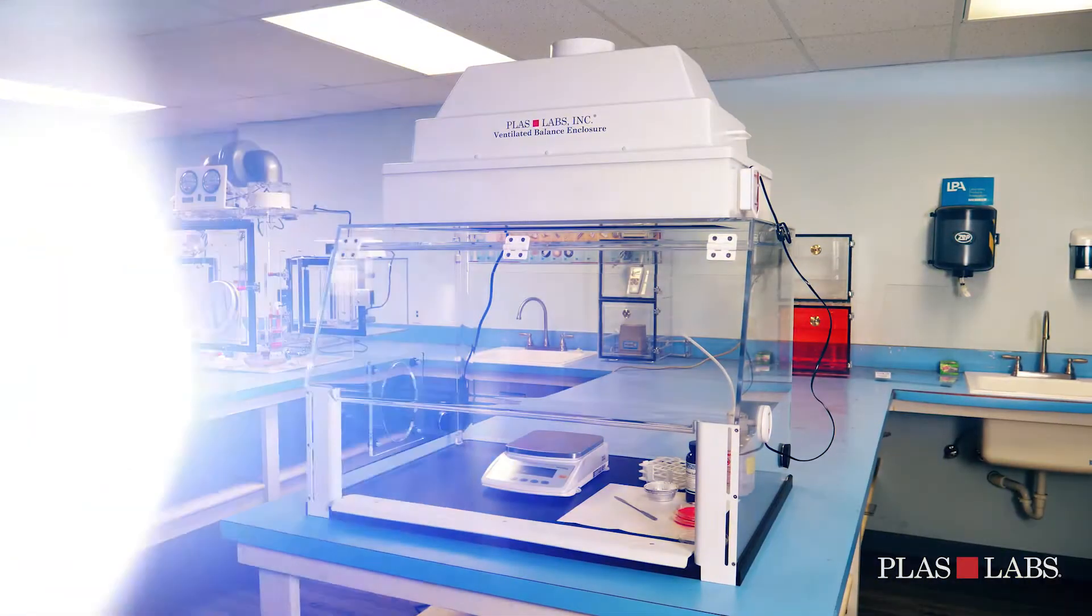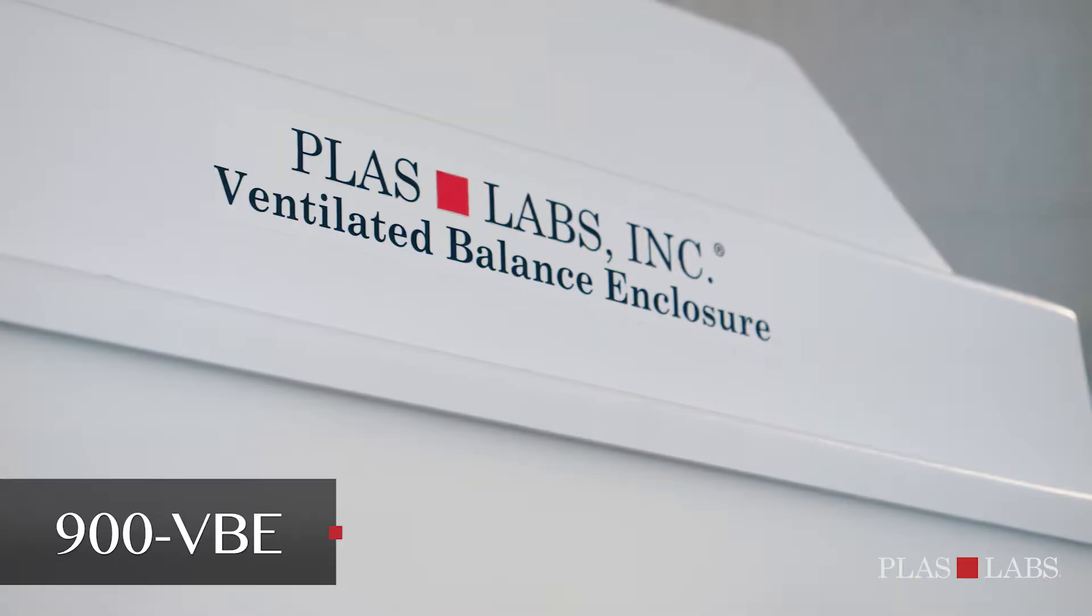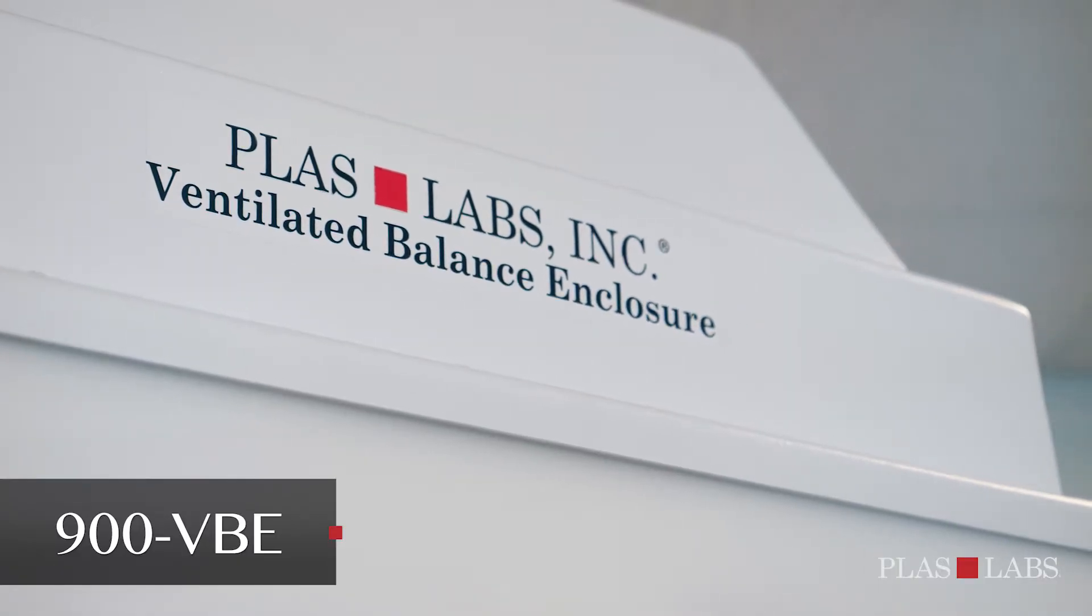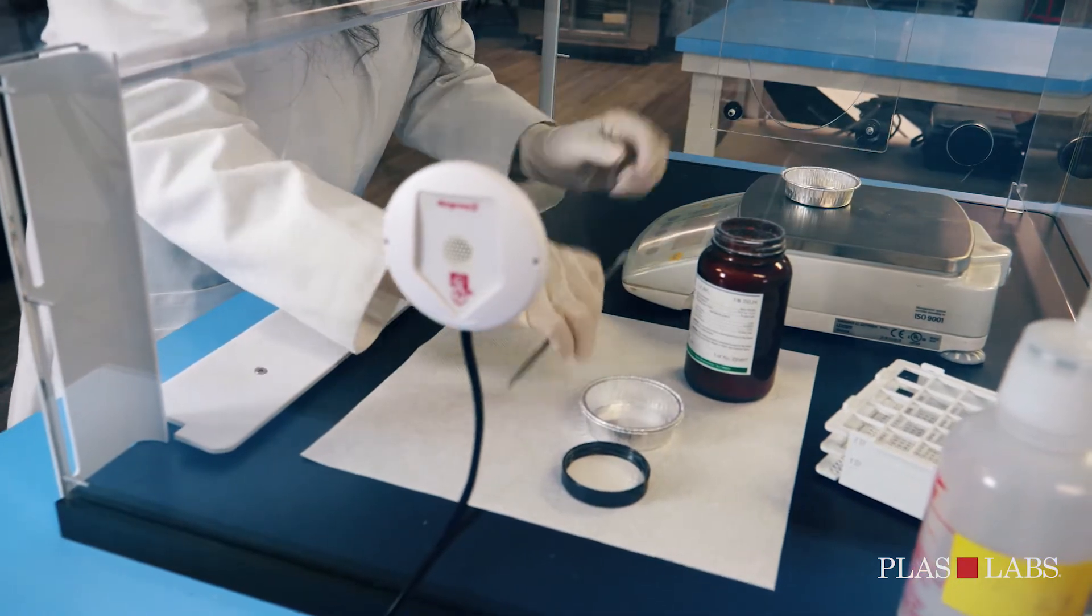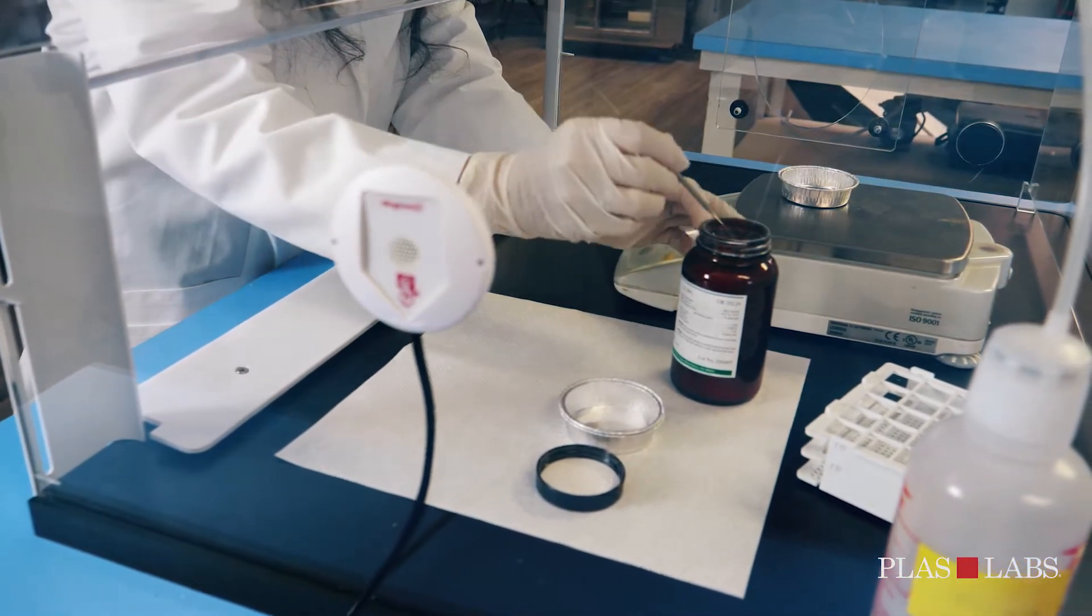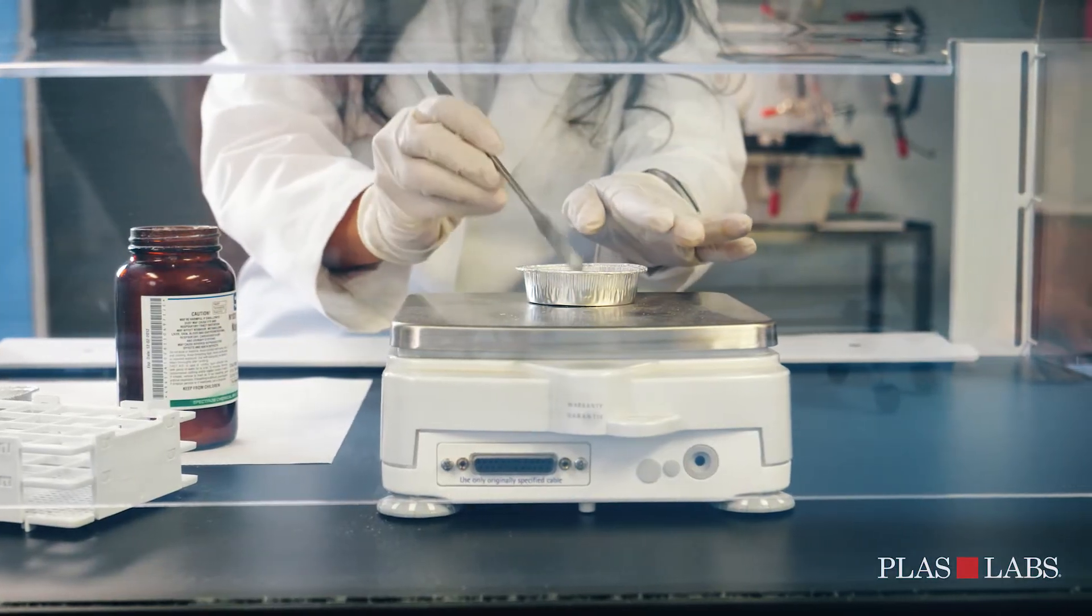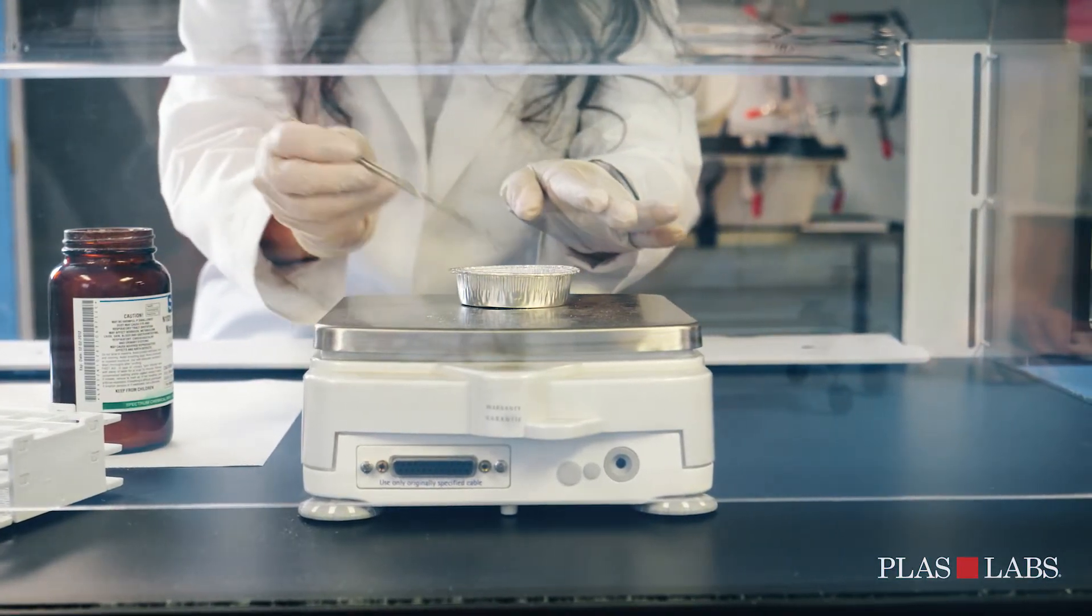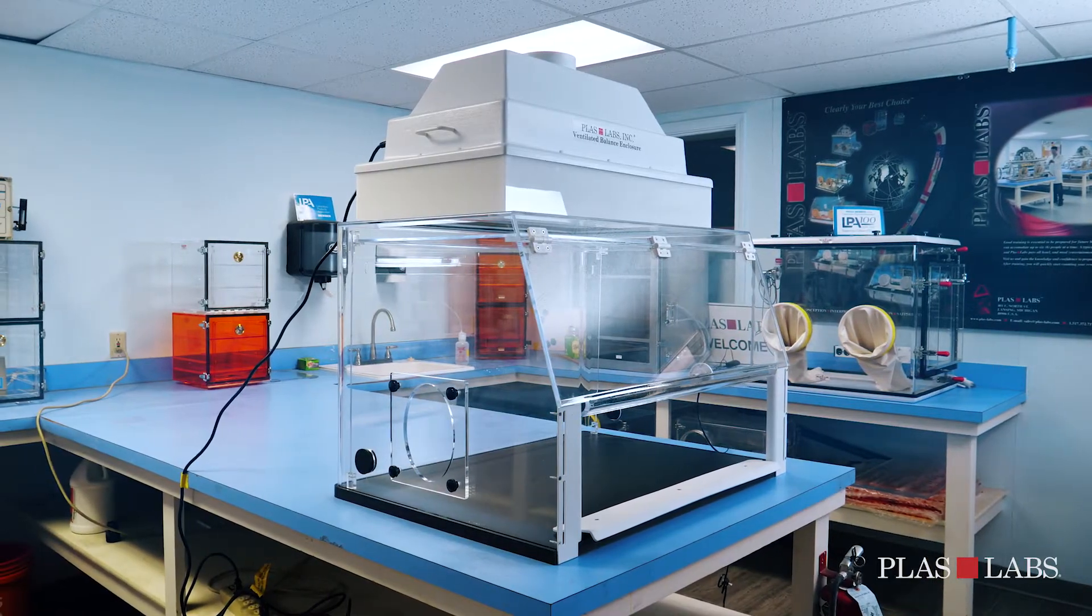Our latest developments include top-mounted HEPA filtration ventilated balance enclosures. The 900 VBE series is designed by PlasLabs for self-contained laboratory processing. These ASHRAE 110 compliant portable ventilated balance enclosures include a top-mounted HEPA filtration system and blower for working with fine powders.